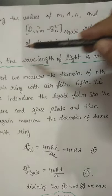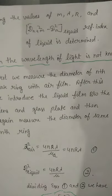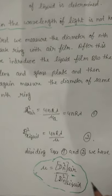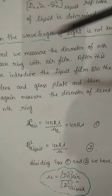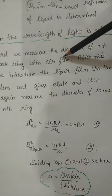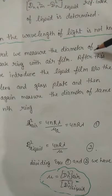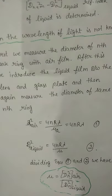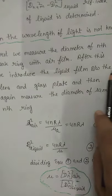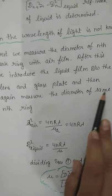There is another case: when the wavelength of light is not known. If we don't know the wavelength of light being used, we can still find the refractive index. In that case, first we measure the diameter of the nth dark ring with air film. After this, we introduce the liquid film and again measure the diameter of the same nth ring with liquid film.